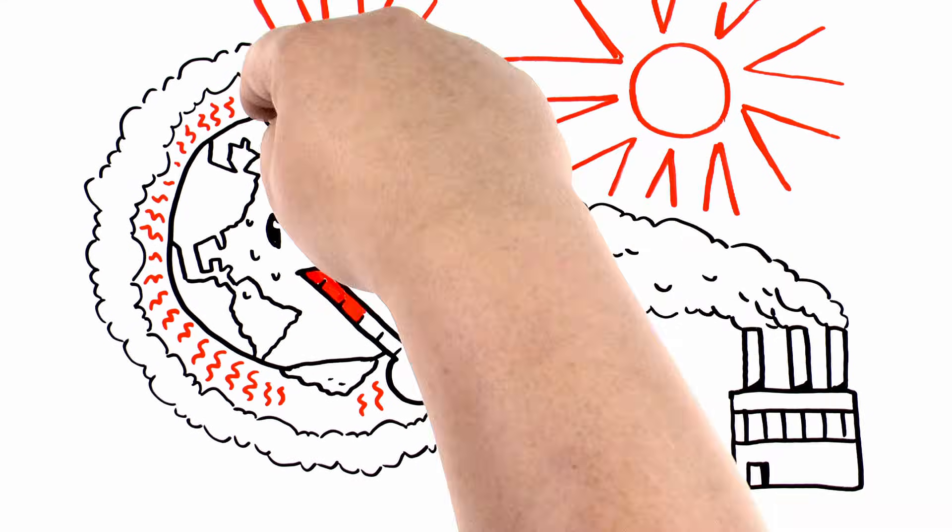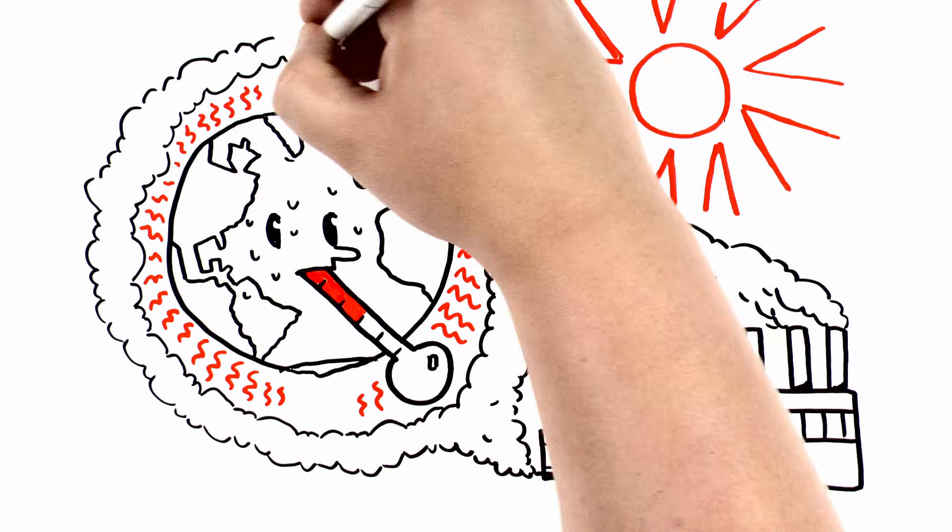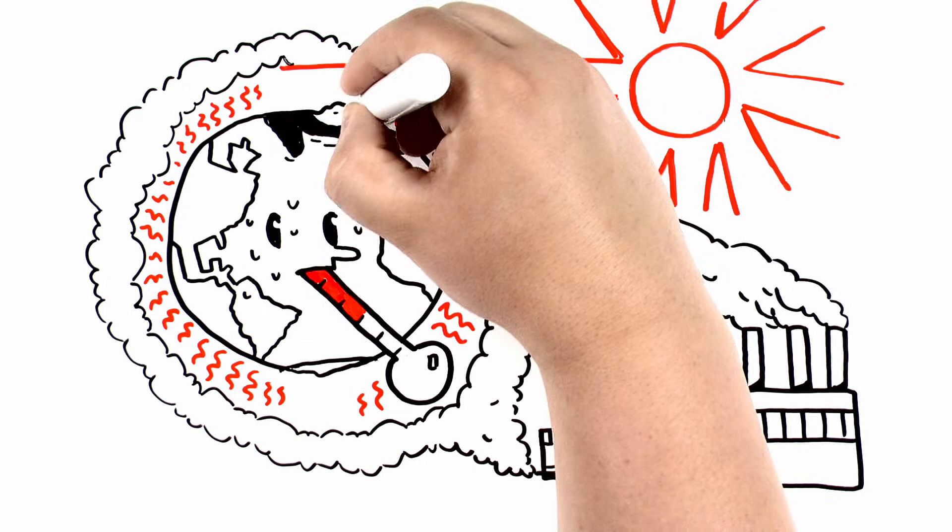And warmer temperatures means, you guessed it, less snow and ice. As they melt, what's left behind are darker patches of land and water.